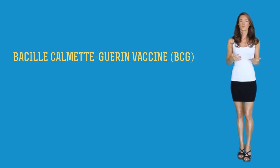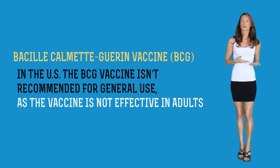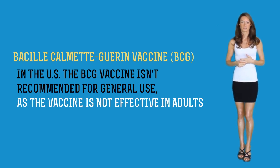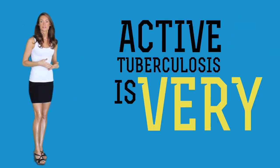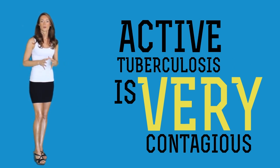Prevention: to prevent tuberculosis, children and infants are vaccinated with the BCG vaccine in countries with high risk of TB. In the United States, the BCG vaccine is not recommended for general use and is not effective in adults. Active tuberculosis is very contagious. To avoid getting the active TB infection, do not spend long periods of time with a person that has an active TB diagnosis until they have been undergoing treatment for at least two weeks. As a caregiver for a TB patient, be sure to use protective measures such as face masks as recommended by your facility.